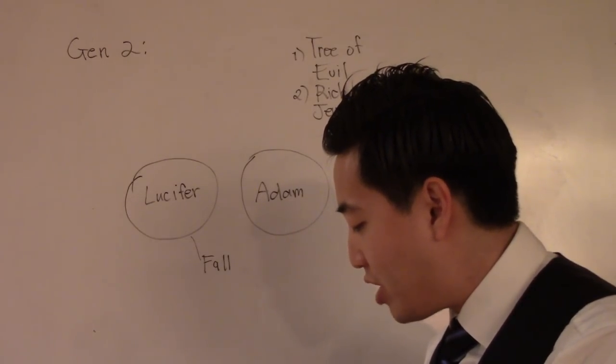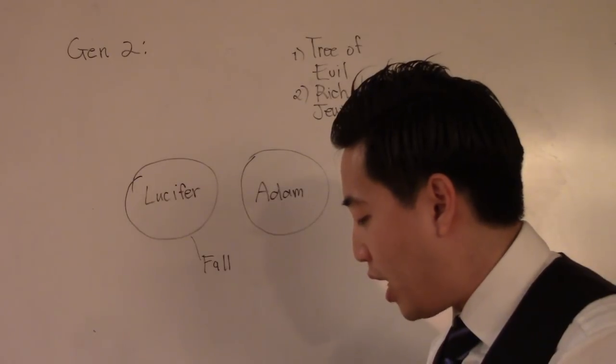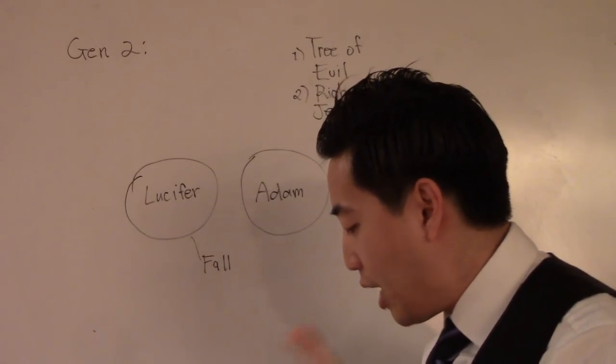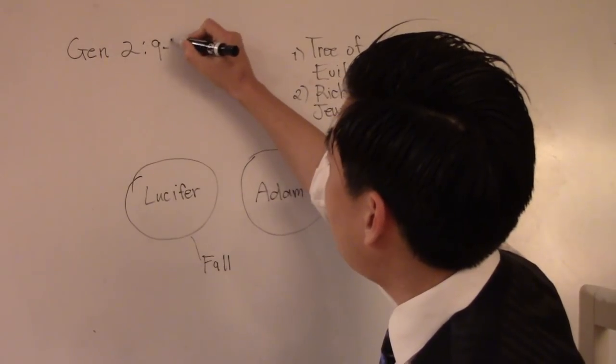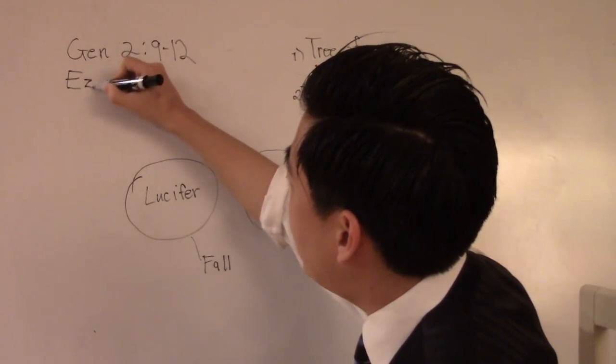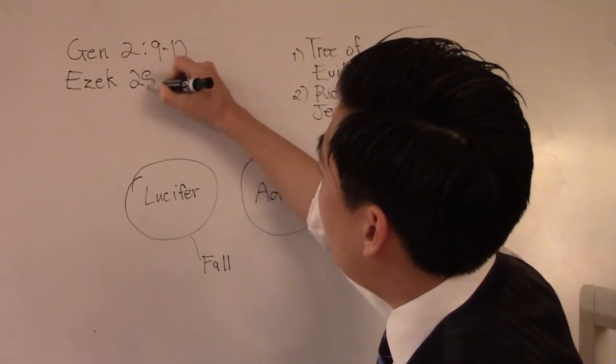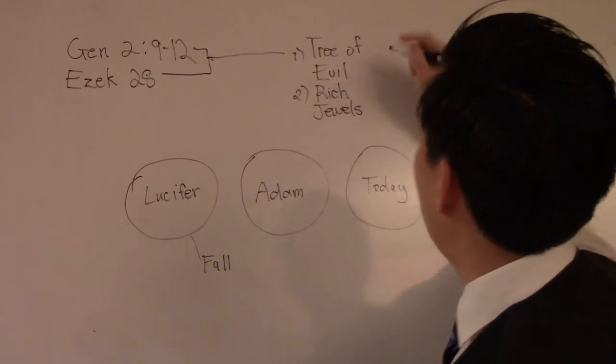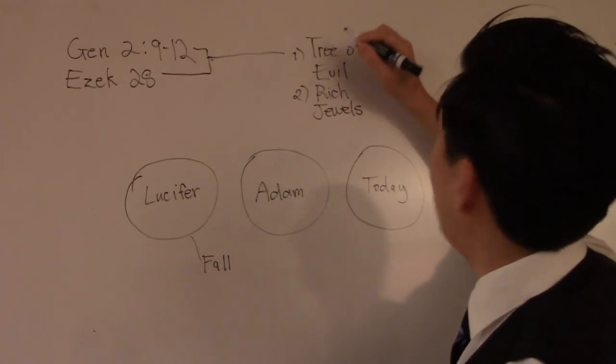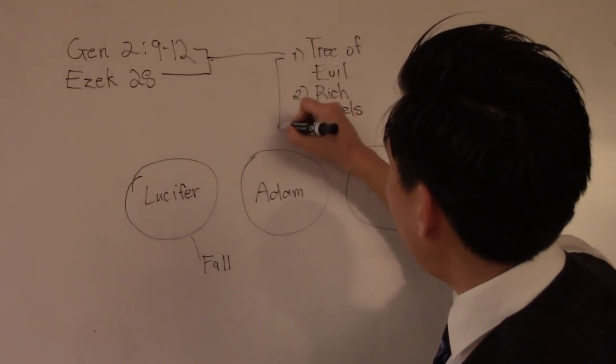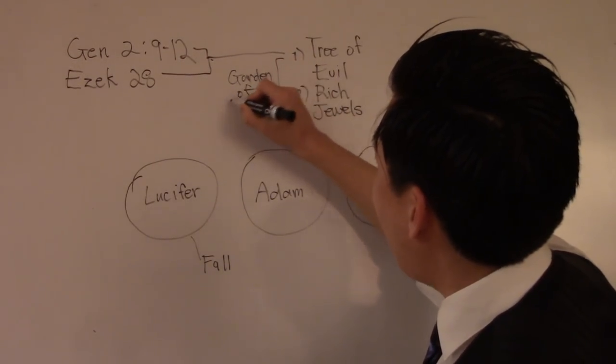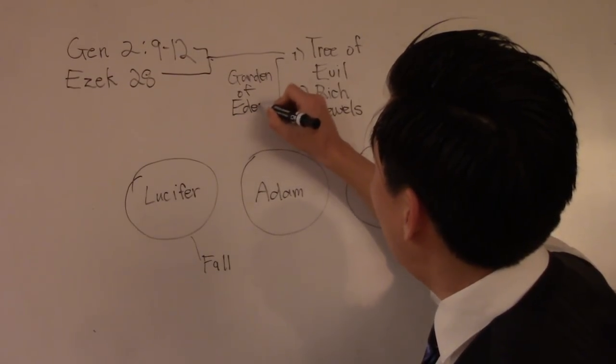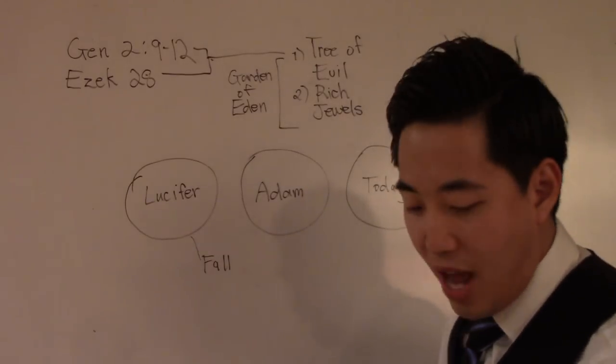The sardius, topaz, and the diamond, the beryl, the onyx, and the jasper, the sapphire, the emerald, and the carbuncle, and gold. So, notice right here, you'll notice that gold, and you'll notice the onyx, and other elements, which matches with Genesis chapter 2, verses 9 through 12. So, Ezekiel chapter 28 shows that Lucifer was covered in rich jewels. Remember, we're talking about here, the garden of Eden. And the garden of Eden consisted of what? Rich jewels. And Satan consisted of the same jewels that the garden of Eden came from. But not only that, he's likened to that tree as well.